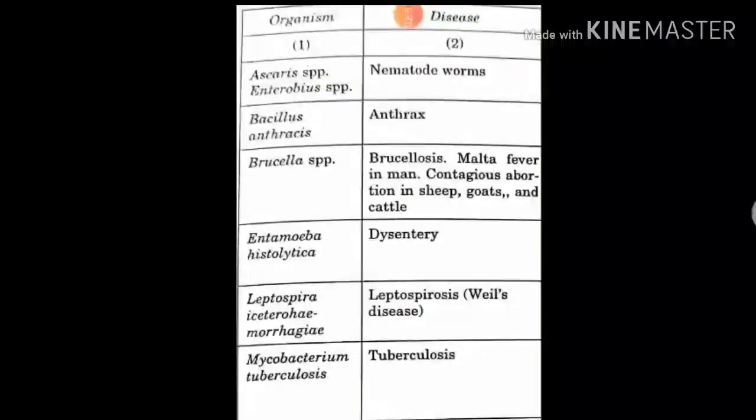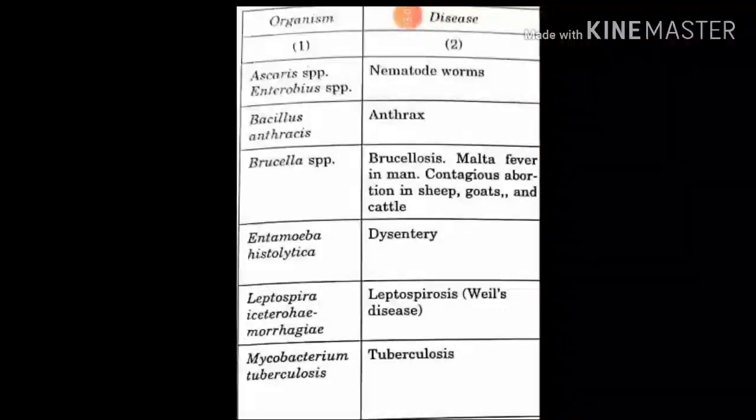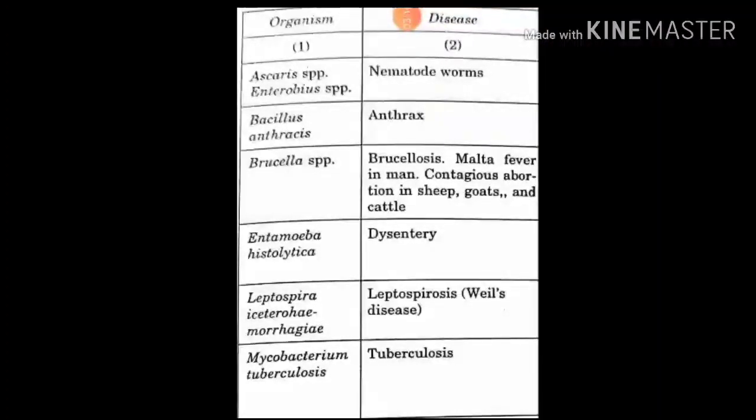Here are some organisms and their diseases. Ascaris - nematode worms, Bacillus - anthrax, Brucella - brucellosis, Entamoeba histolytica - dysentery, Leptospira - leptospirosis, Mycobacterium tuberculosis - tuberculosis. Everything is bacteria except Entamoeba histolytica, which is amoeba.